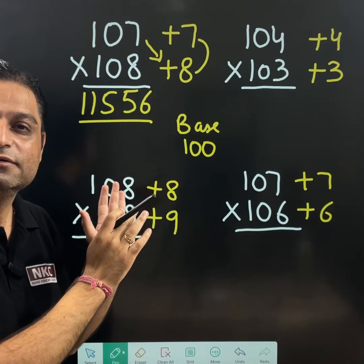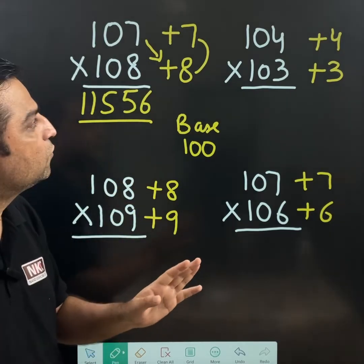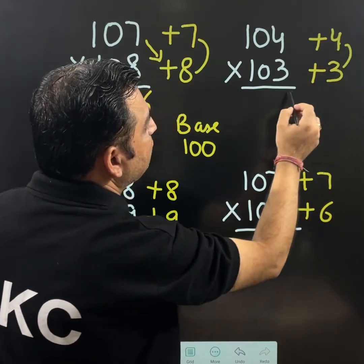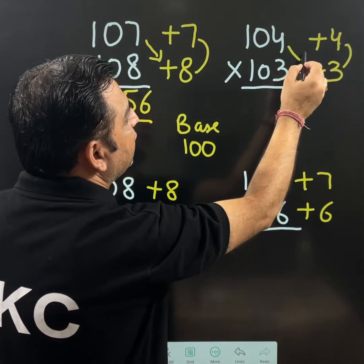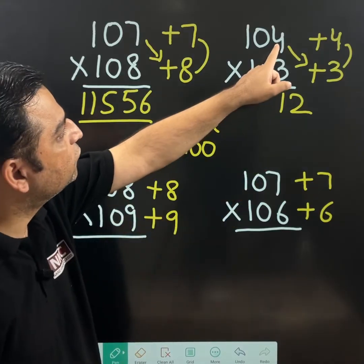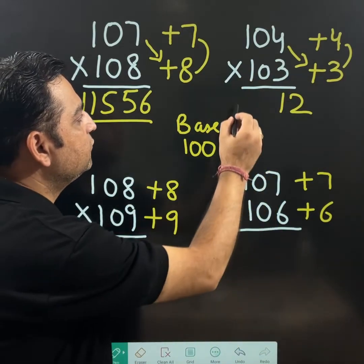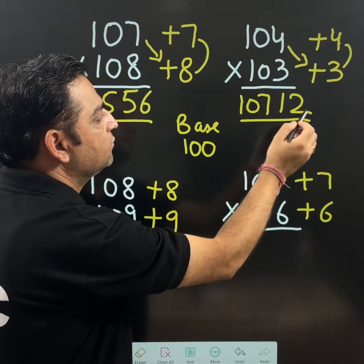See, single step it will take. You need not to do any heavy calculation. Check the next one. If it is 4 multiply 3. 4 multiply 3 is 12. And making an arrow, it means 104 plus 3. 104 plus 3 is 107. That is it.